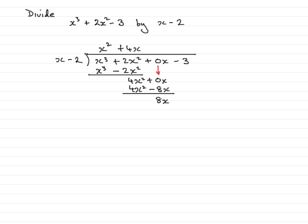Bring down the minus 3 now. OK, so put the minus 3 there. What do we multiply the x by to give 8x? And that's going to be plus 8. So we have 8x minus 8 times 2, which are 16.